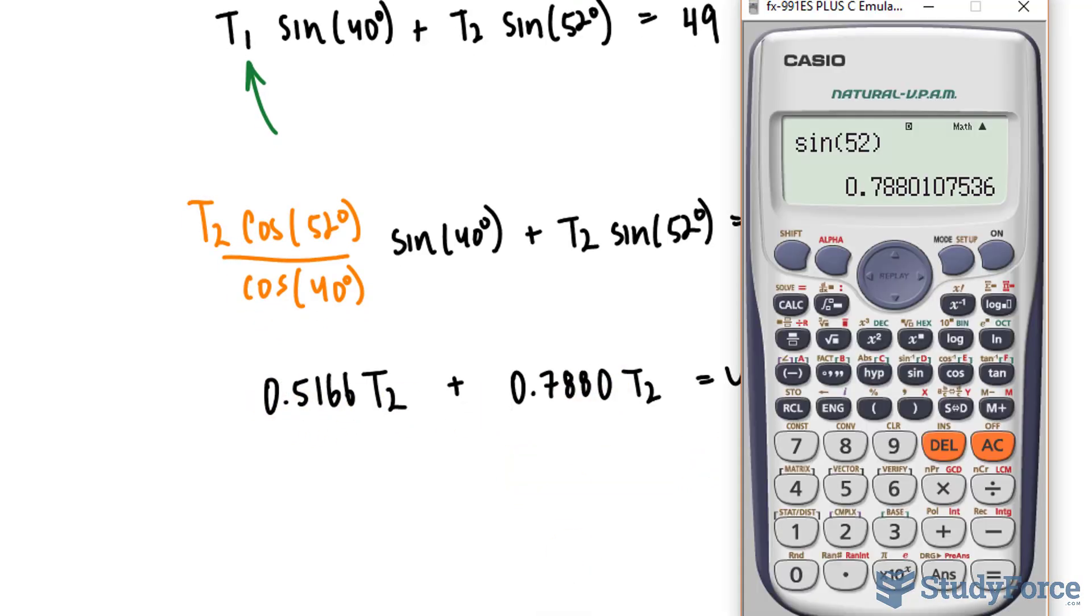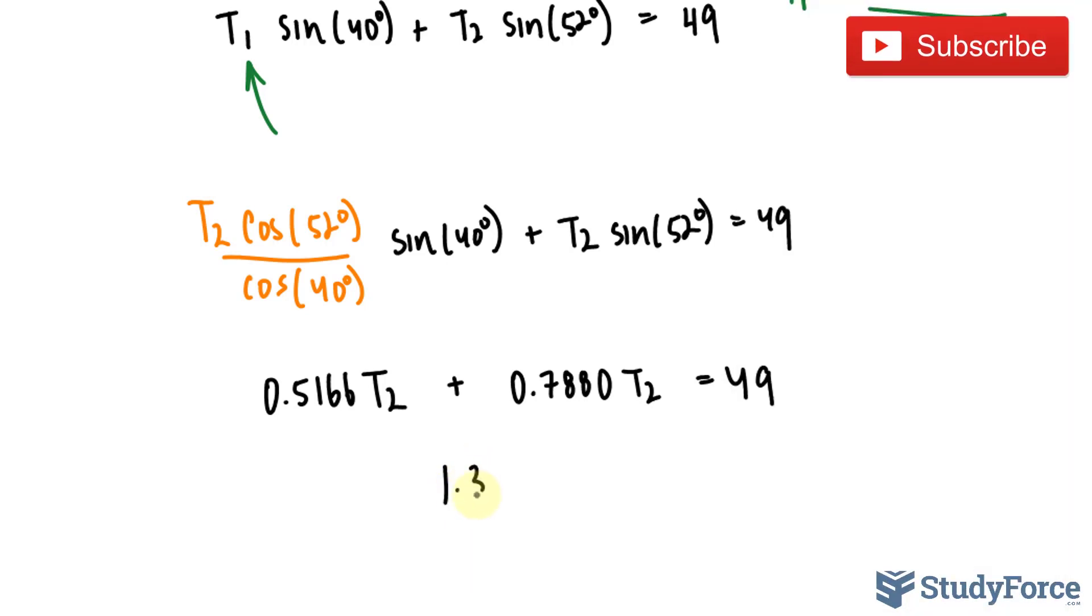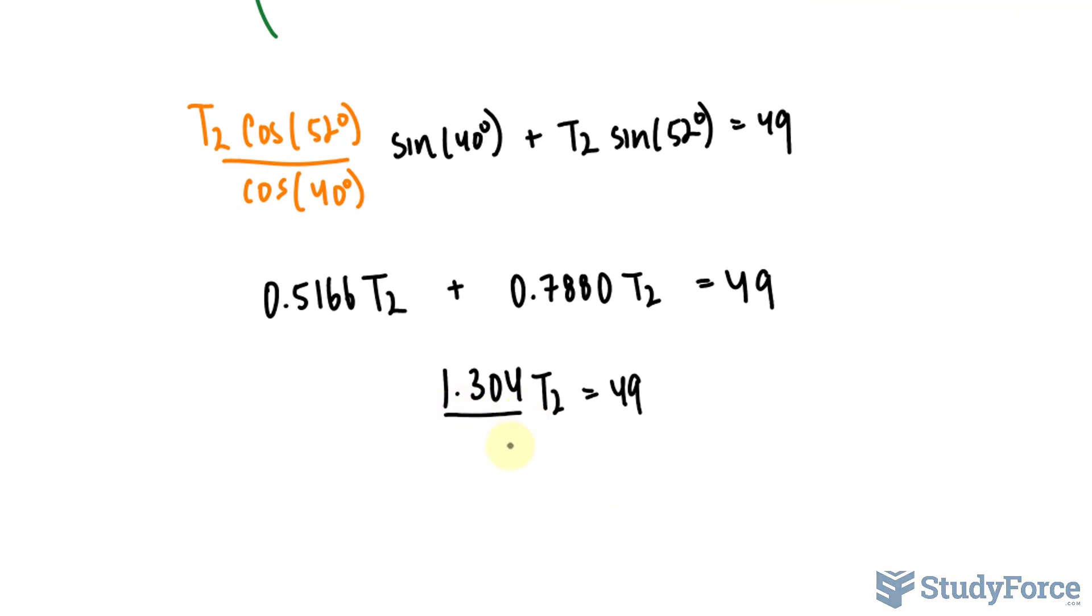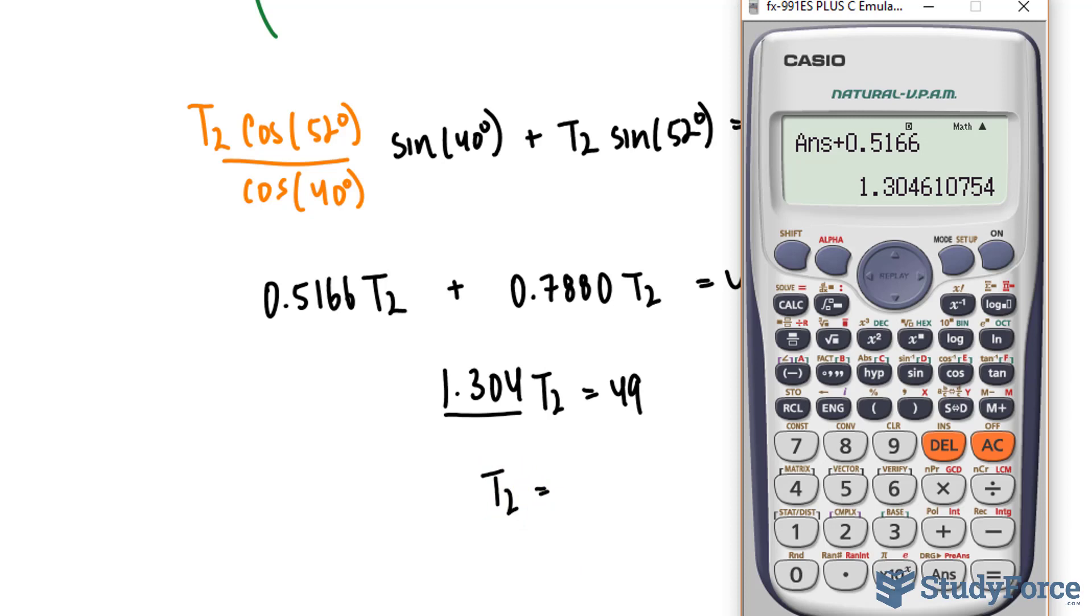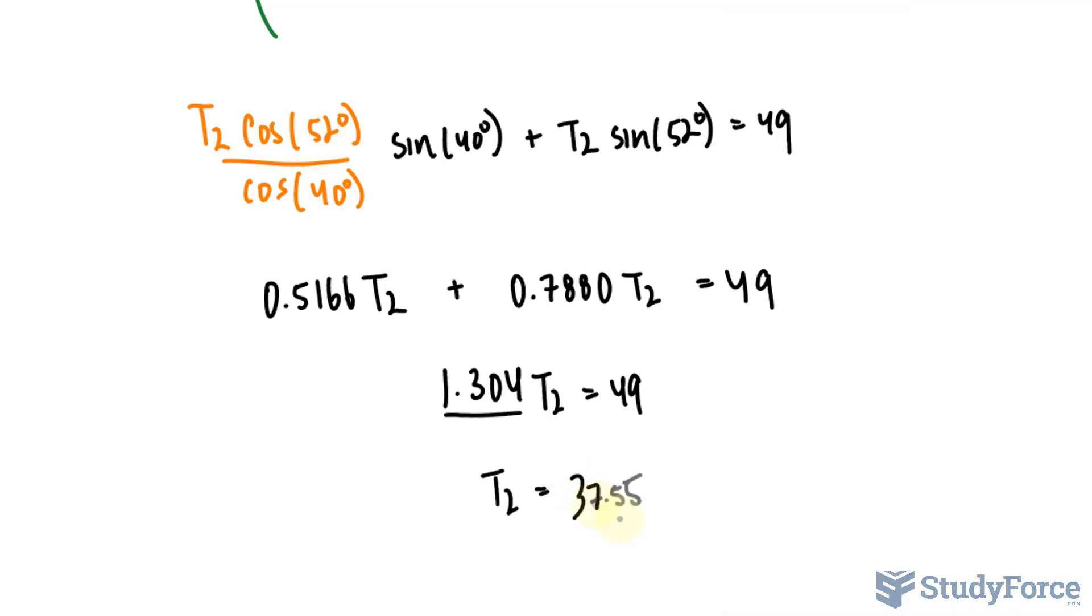I'll add these coefficients up, plus 0.5166. We end up with 1.304 T sub 2 is equal to 49. Divide both sides by this coefficient, where we end up with T sub 2 is equal to 49 divided by the number that I just recorded, 37.55. So the tension of wire 2 is 37.55 newtons.